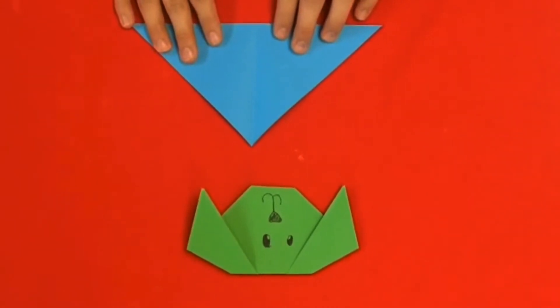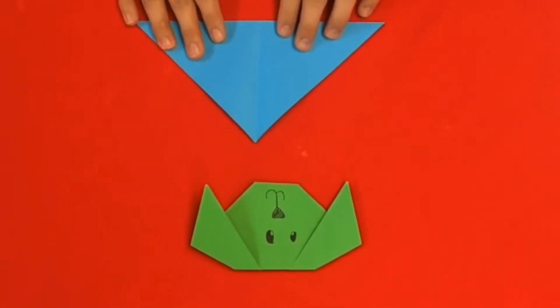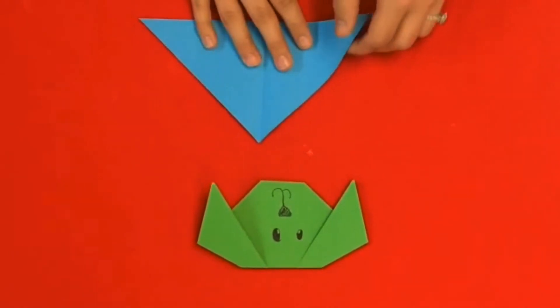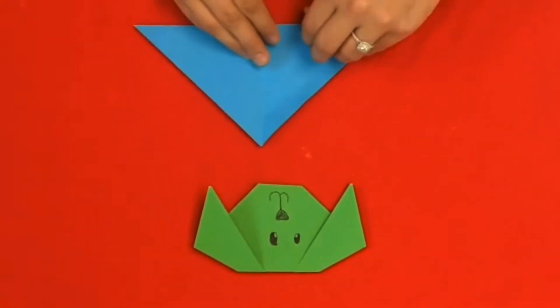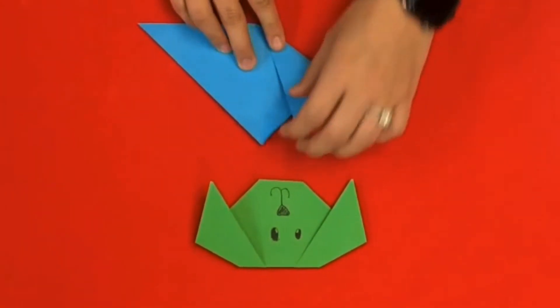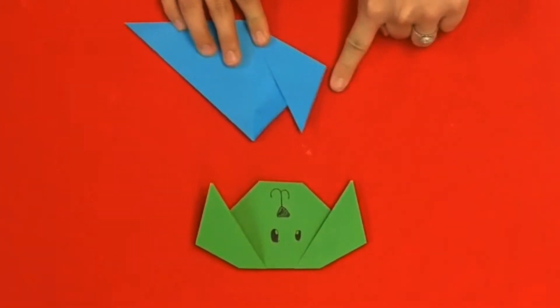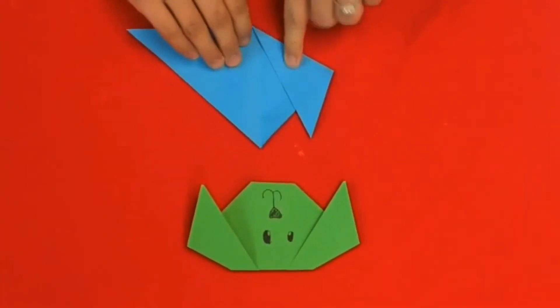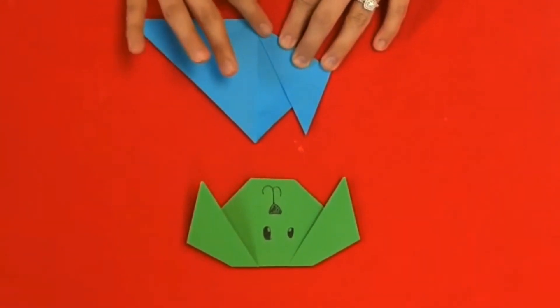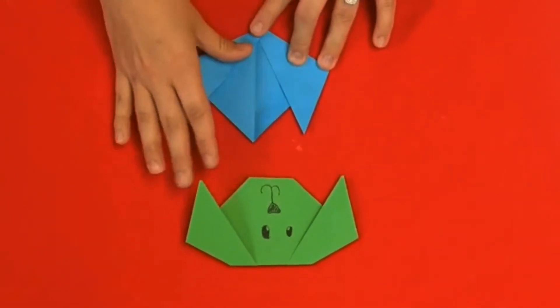Next, fold both corners of the triangle down at an angle to create the dog's ears. And it may overlap on the dog's ears so that's just fine.